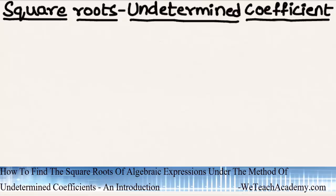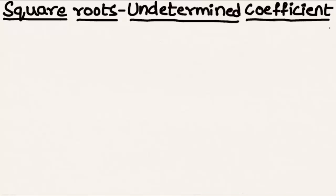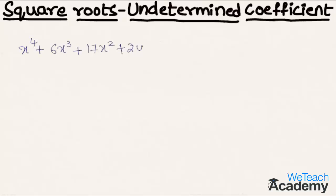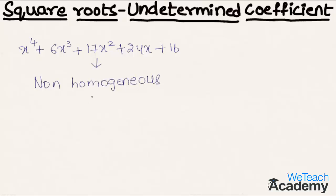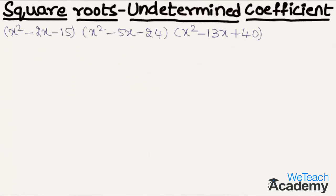Welcome to vtchacademy.com. In this presentation we are going to find the square roots of algebraic expressions under the method of undetermined coefficients. We have an expression x⁴ + 6x³ + 17x² + 24x + 16. We observe that the powers of x are different in each term, so we call this a non-homogeneous expression. Using the method of undetermined coefficients, we can find the solutions of such expressions. Now let us solve a few examples.